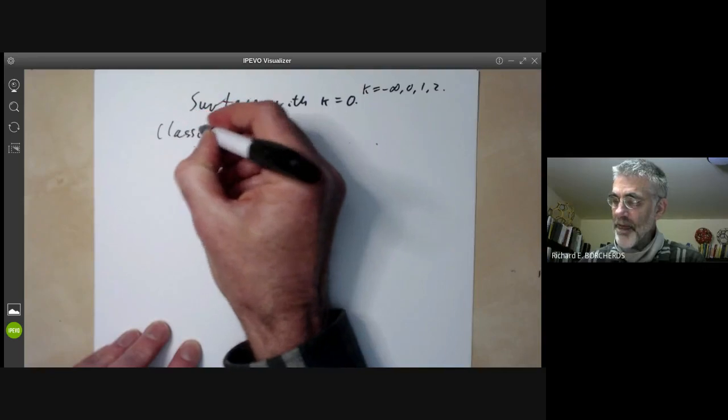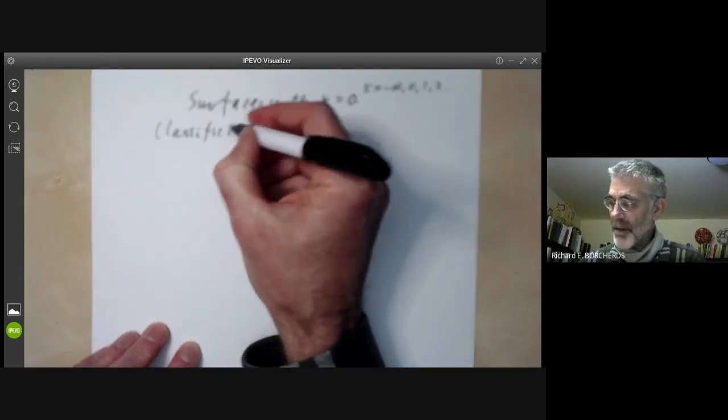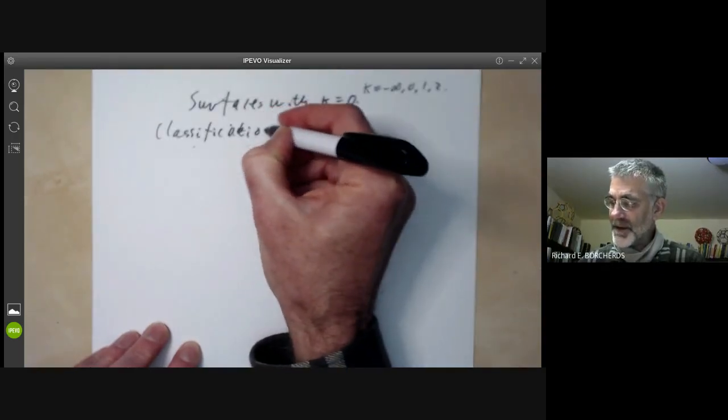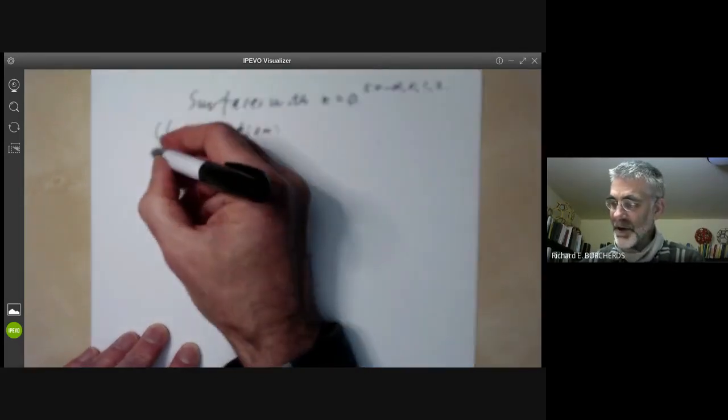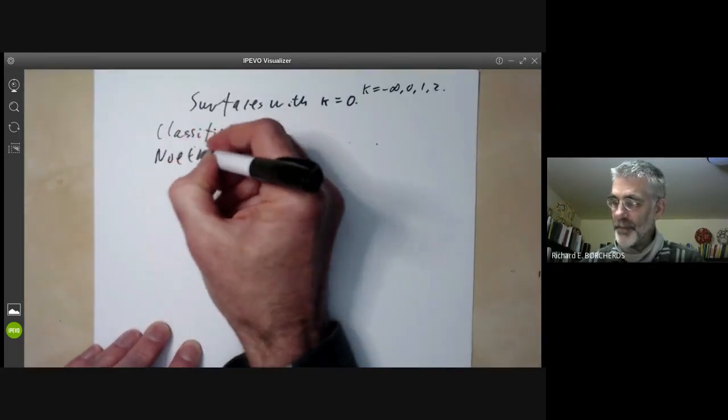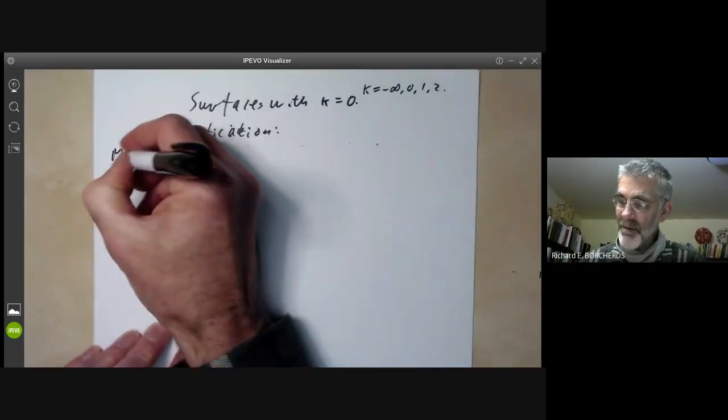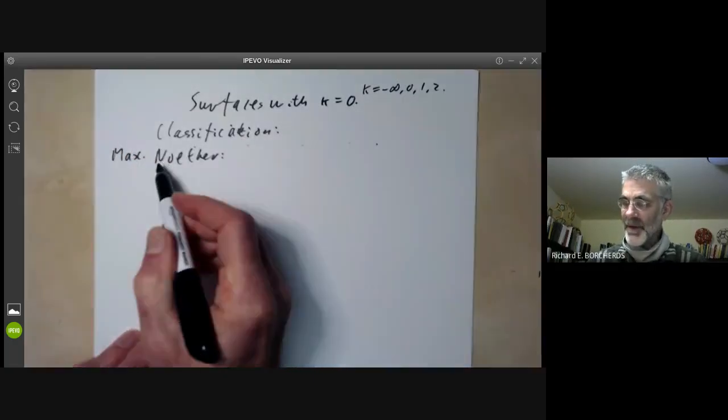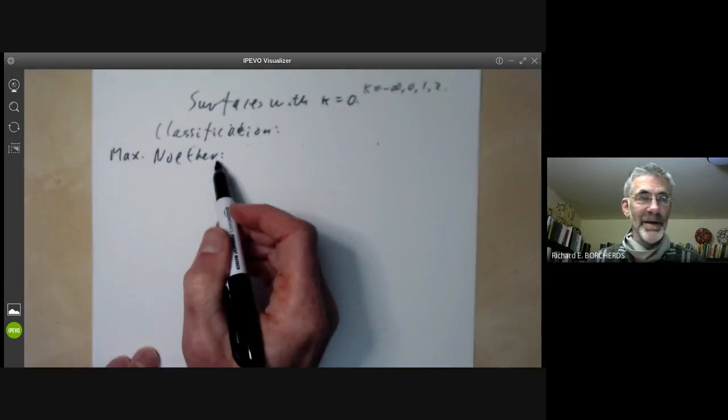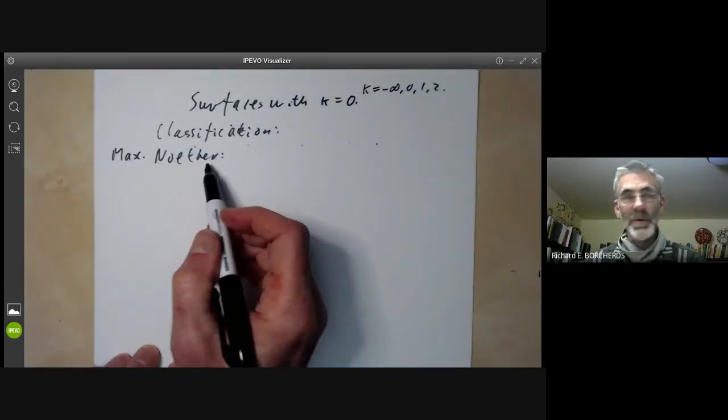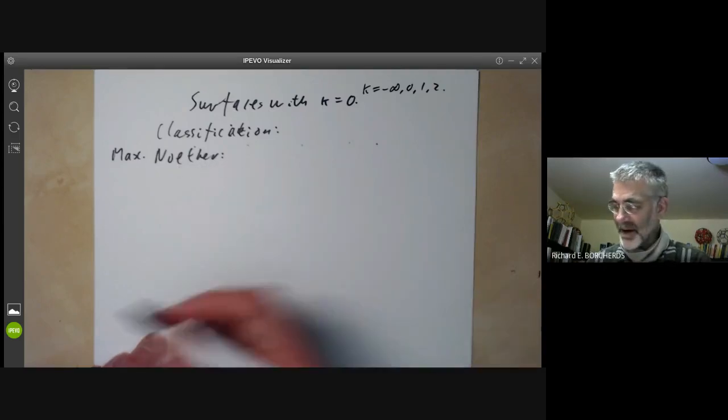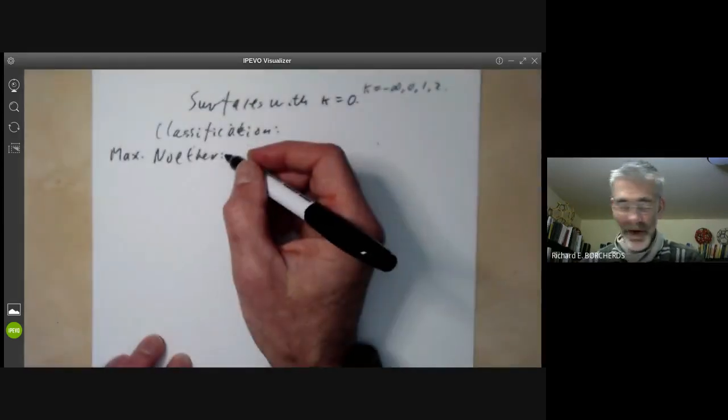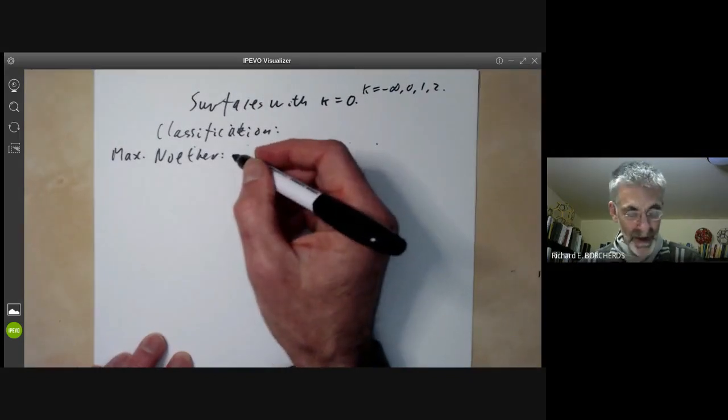So the classification of these surfaces uses a basic identity due to Noether. I should say this is due to Max Noether. The famous Noether is Emmy Noether. Her father was Max Noether, who was also actually a pretty good mathematician.